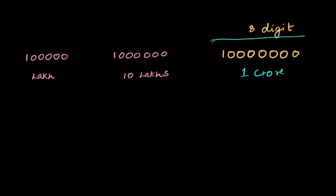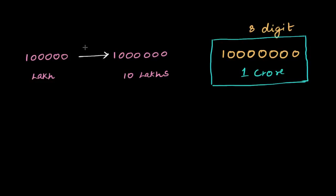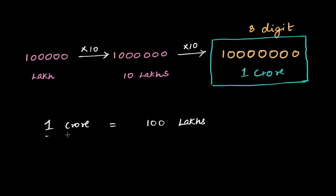I'm putting a box around crore because this is the largest named number we have in the Indian system — there are no more new names to learn after this. You learned hundred, then thousand, then ten thousand, then lakh, and now crore. Anything more will just be ten crores, hundred crores, thousand crores, or even a lakh crores, but there's no new name after crore. To go from lakh to ten lakhs you multiply by ten, and then from ten lakhs to a crore you multiply by another ten. So one crore equals a hundred lakhs.